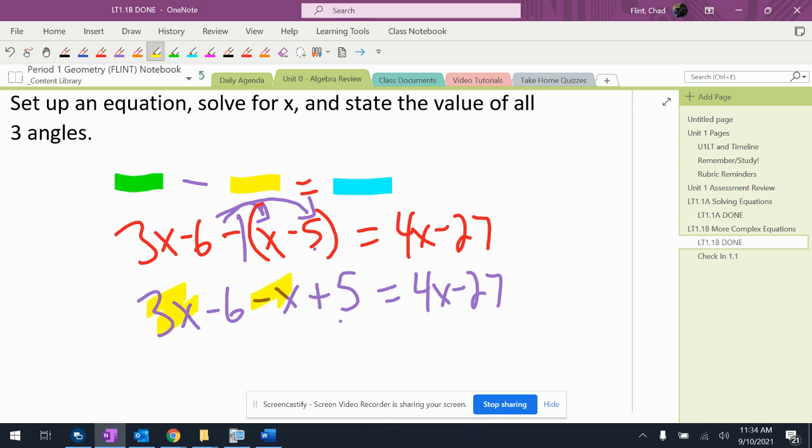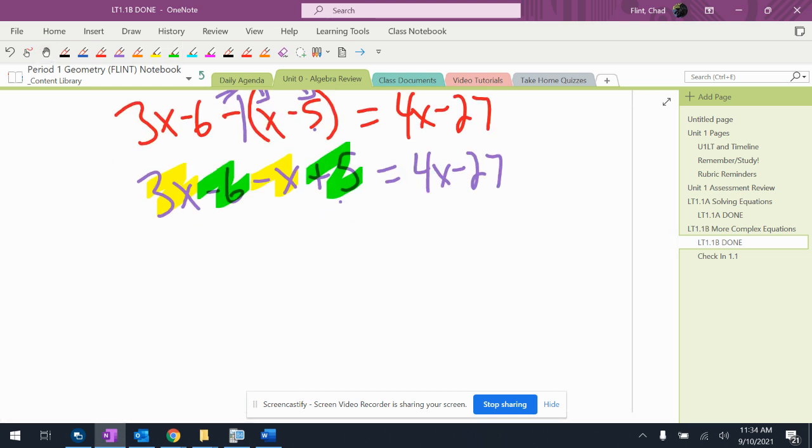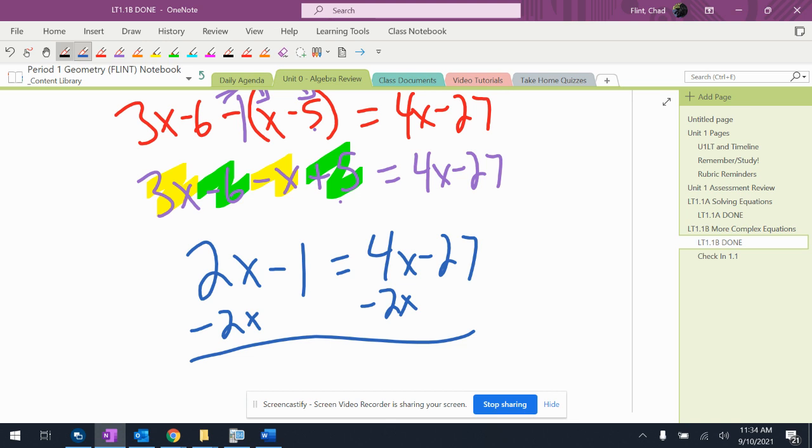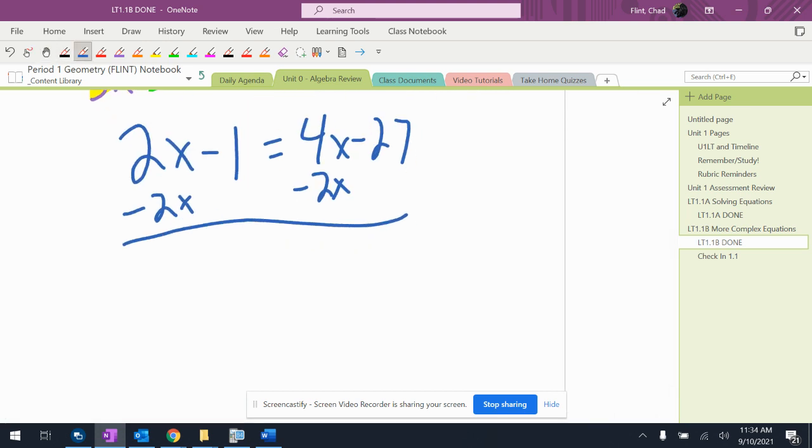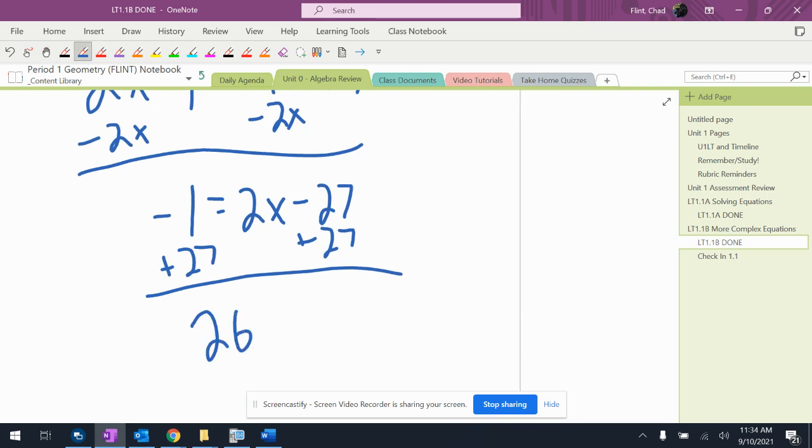I have to combine some like terms here. Three x minus x is 2x. Negative six plus five is minus one. Move the smaller x, so subtract the 2x. And then add 27. And you get 26 equals 2x. So x equals 13.